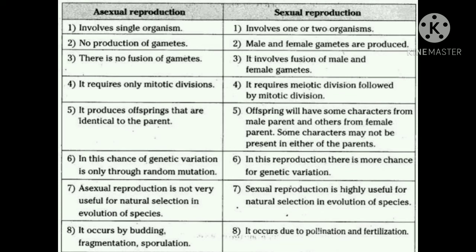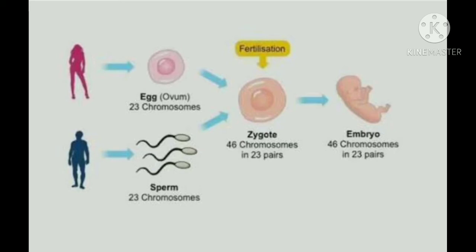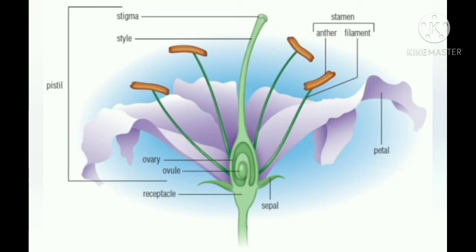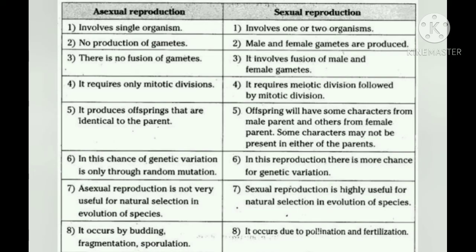In Sexual Reproduction, we need male and female gametes. In animals such as human beings, these are sperms and ovum. In case of plants, male gametes are present in pollen grains and female gametes are in ovules — both are compulsory for sexual reproduction. In Asexual Reproduction, there is no fusion of gametes — fertilization does not take place, because gametes are absent. In Sexual Reproduction, fertilization is compulsory: male and female gametes are produced and fertilization must occur to produce offspring.